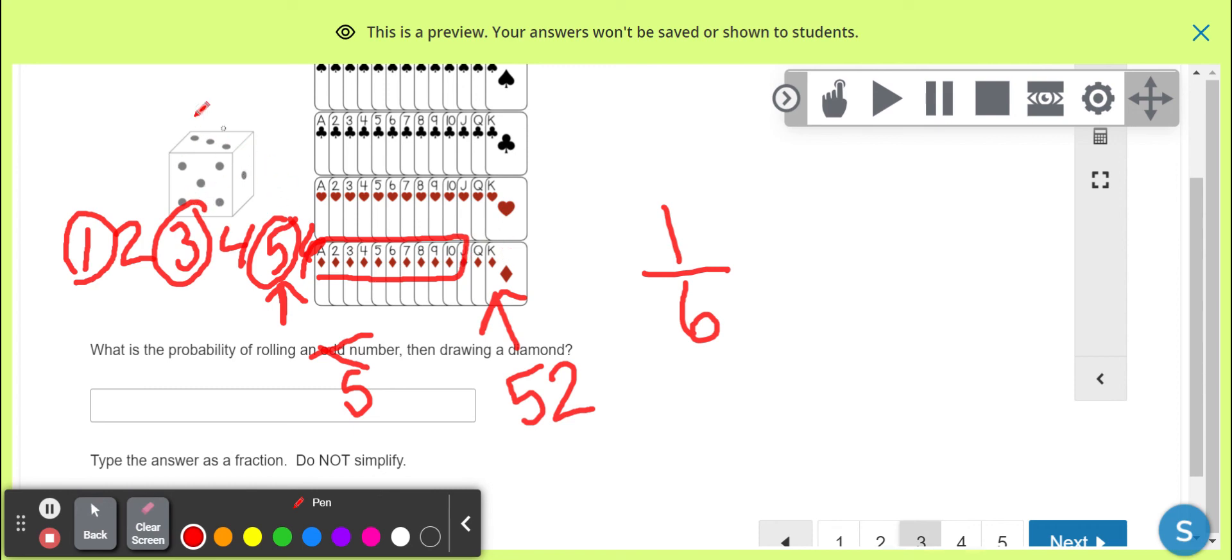So again, you're going to find the fraction of the first thing happening, the fraction of the second thing happening. And then you multiply your two fractions, whatever they are, and make sure you multiply straight across. And do not simplify.